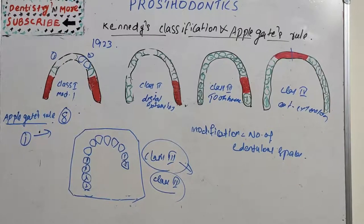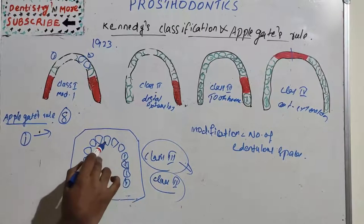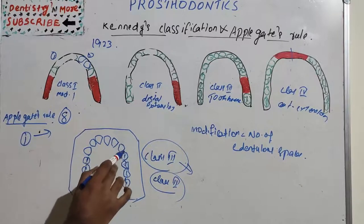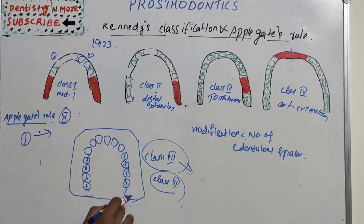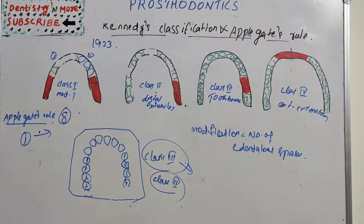Rule number 2: if the third molar is missing and is not to be replaced, it is not considered in the classification. Rule number 3: if the third molar is present and is to be used as an abutment, it is considered in the classification.